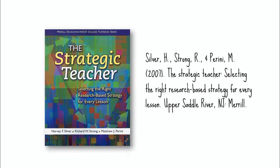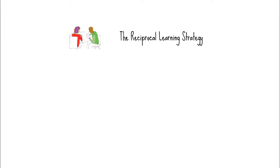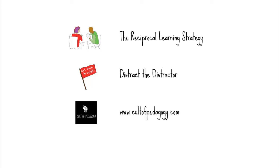This strategy comes from Silver, Strong, and Perini's outstanding book, The Strategic Teacher, which contains complete descriptions of 20 research-based strategies for teaching any subject. If you enjoyed this video, take a look at some others in our fast-growing collection. The Reciprocal Learning Strategy builds more rigor and structure into pair work. Distract the Distractor is a low-tension way to deal with disruptive students. And come on over to www.cultofpedagogy.com for a ton of other articles, book and technology reviews, and honest, in-depth examinations of the factors that impact the work of teachers. Thank you for watching, and have a great day!